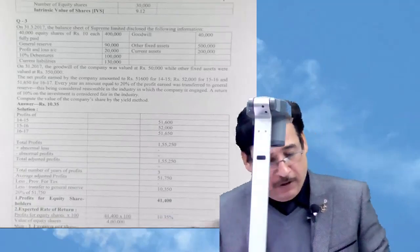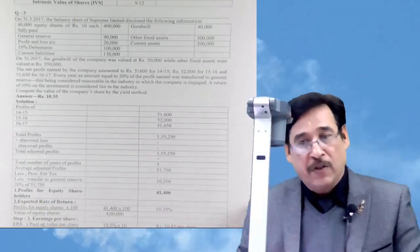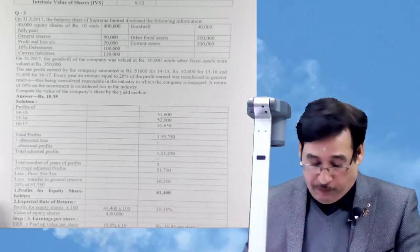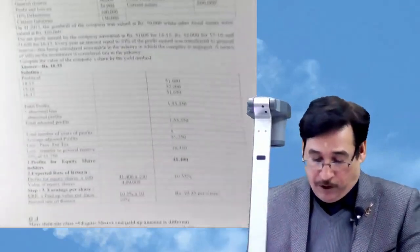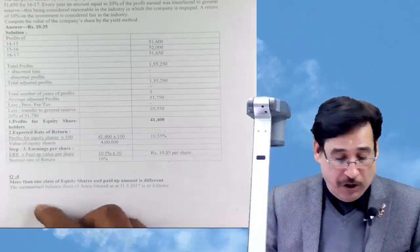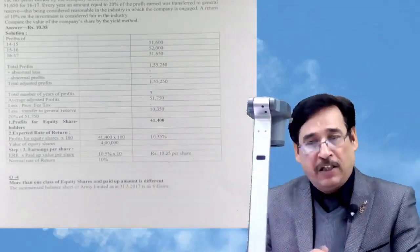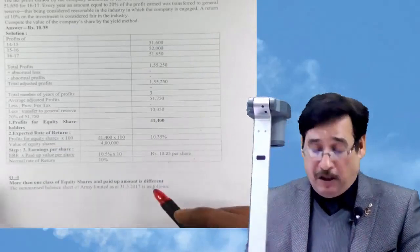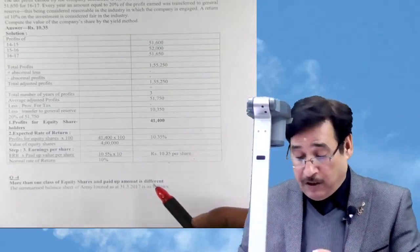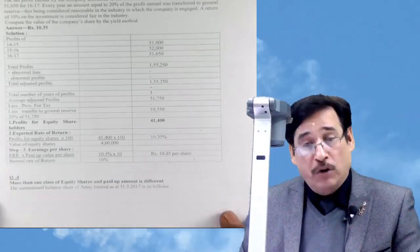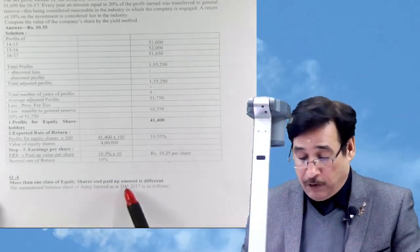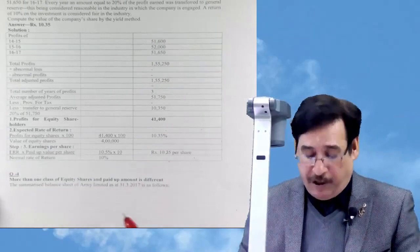Welcome again to this session. The net assets backing method is still in use. We have picked up question number four, which also relates to this methodology. However, in this case we will see a variation: how to compute the value per share when there is more than one class of equity share and the paid-up amount is different. The summarized balance sheet of Army Limited is as follows.